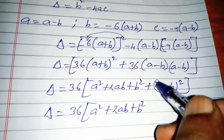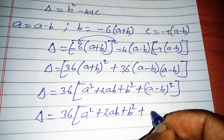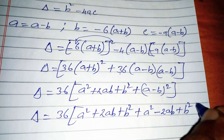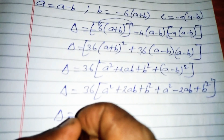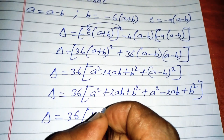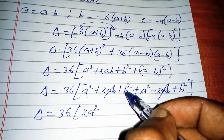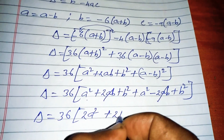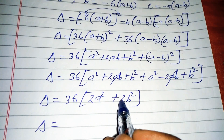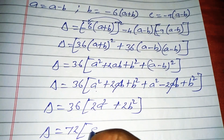Delta equals 36 times [(a squared plus 2ab plus b squared) plus (a squared minus 2ab plus b squared)]. The 2ab terms cancel: delta equals 36 times [2a squared plus 2b squared]. Taking 2 as a common factor: delta equals 72(a squared plus b squared).